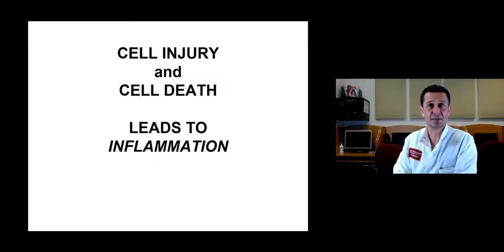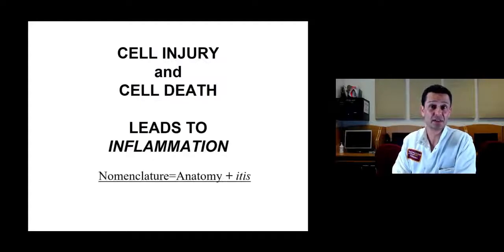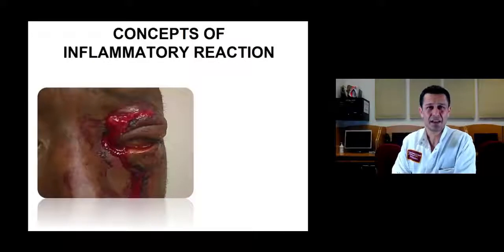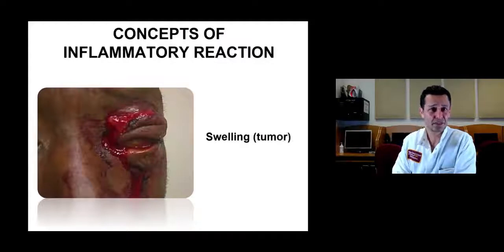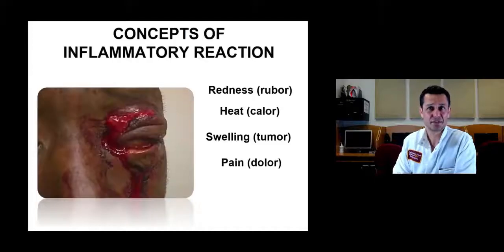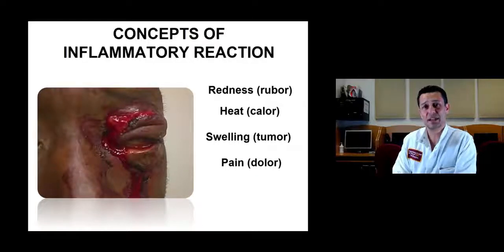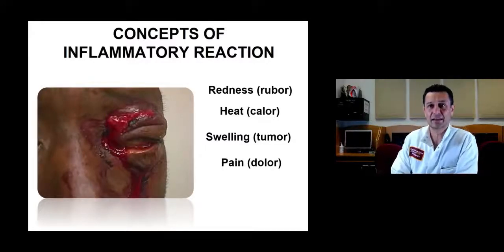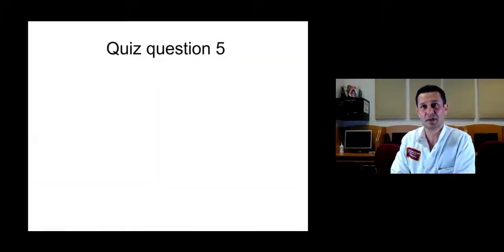We're going to talk about how cell injury and cell death leads to inflammation — the itises like dermatitis and mucositis. Here's a patient that got hit by a baseball bat and has severe acute inflammation — redness, heat, swelling, and pain, with loss of function. The patient can't see out of this eye, which can be a severe ophthalmologic complication potentially resulting in loss of the eye. It's a great example of an inflammatory reaction. Here's another quiz question.